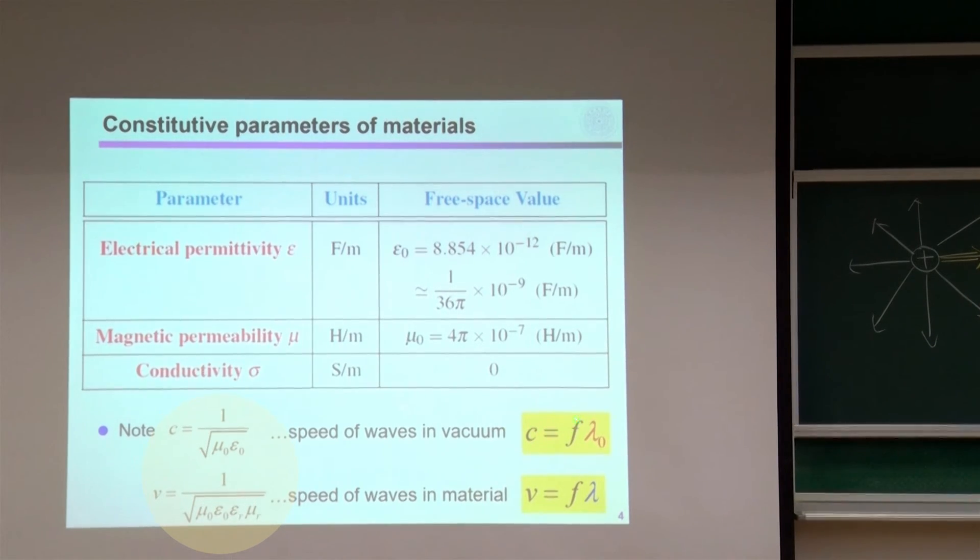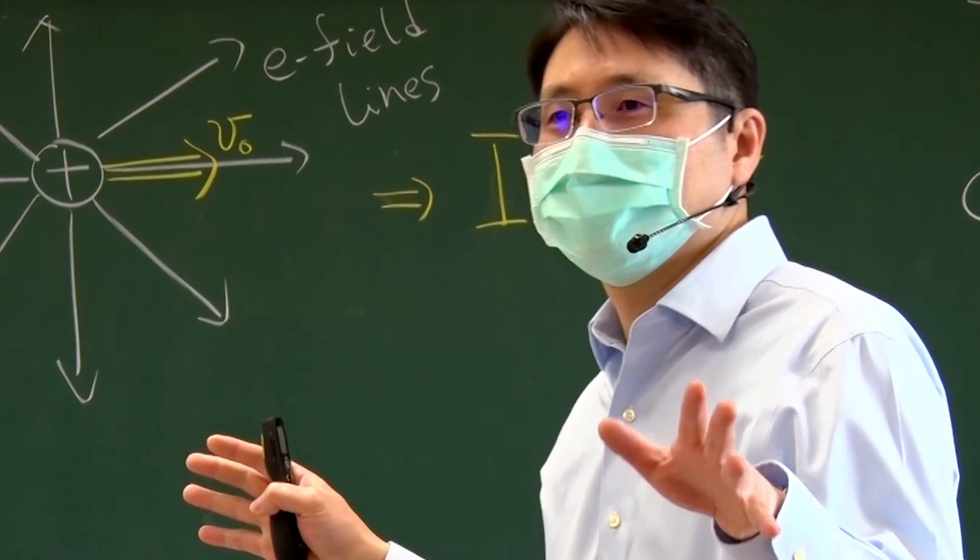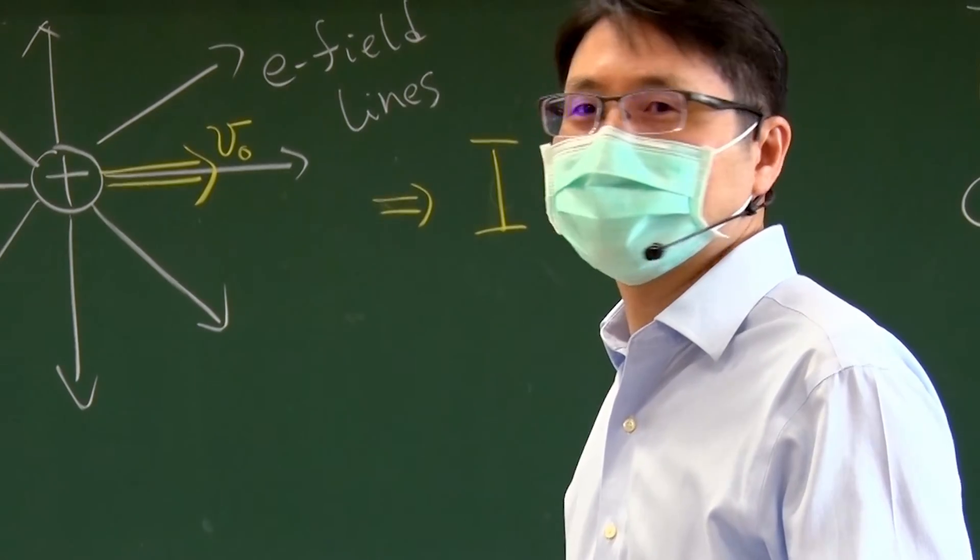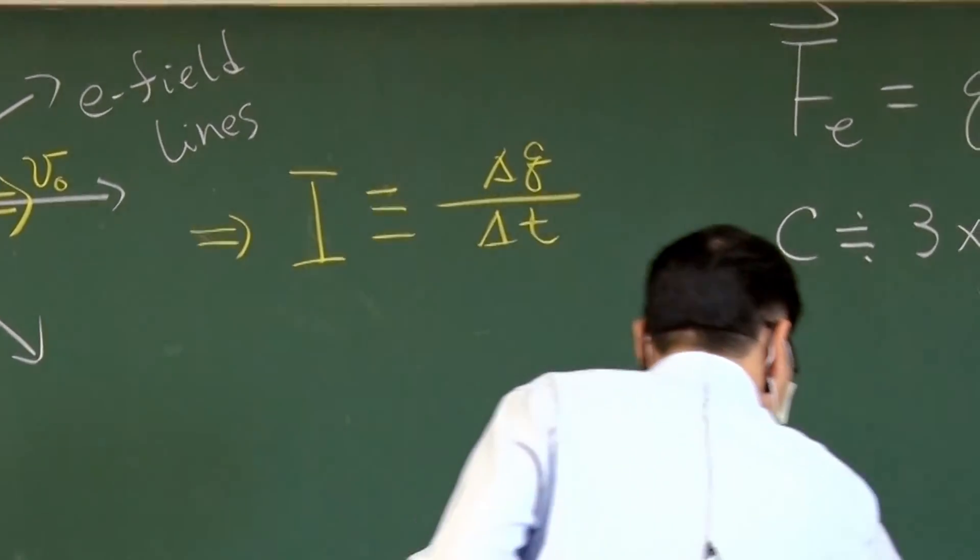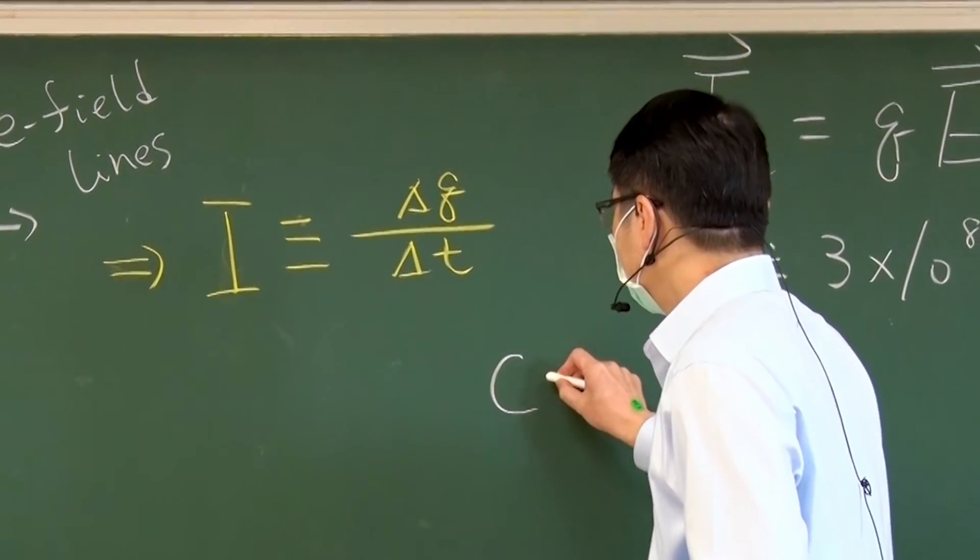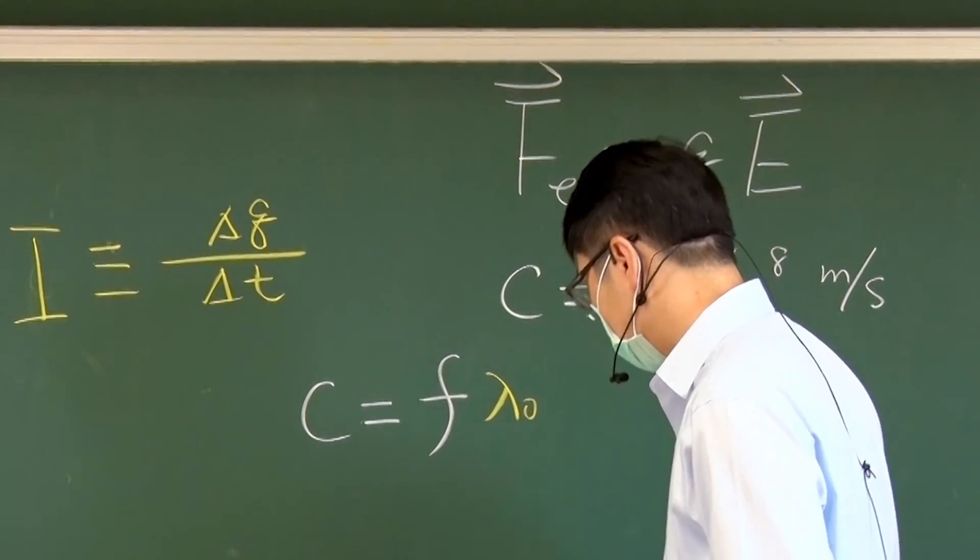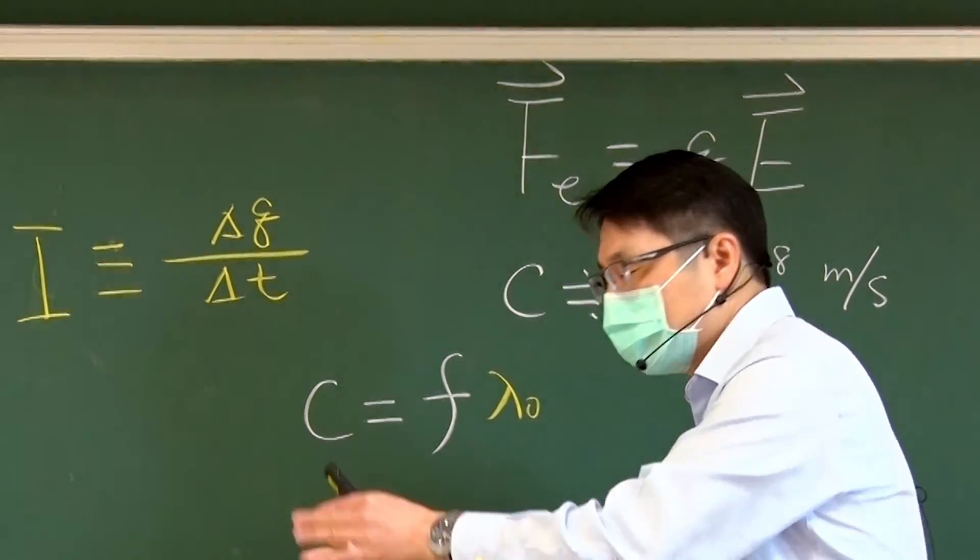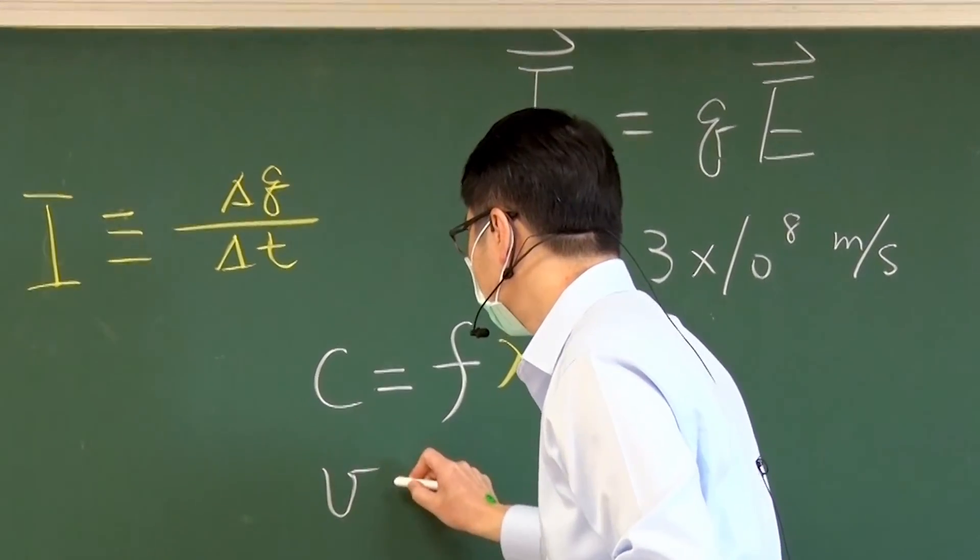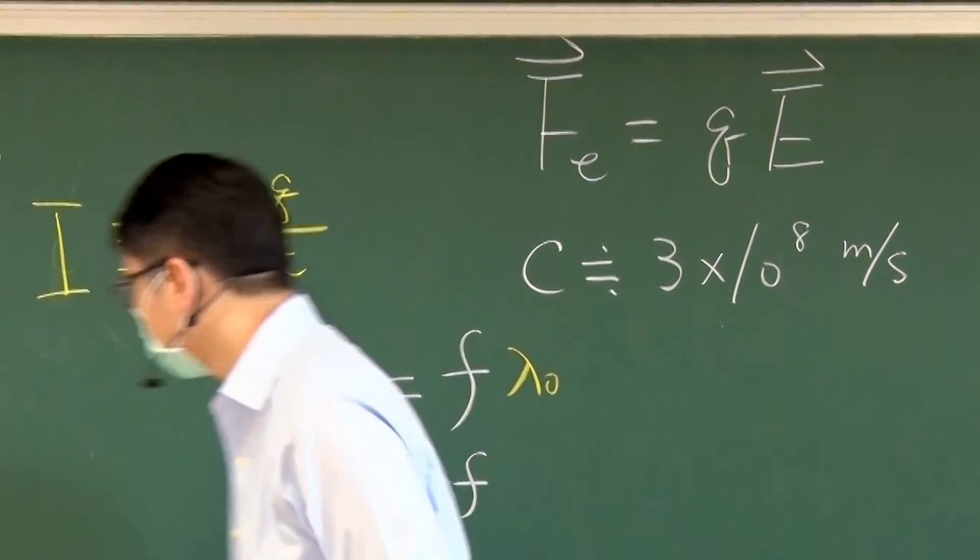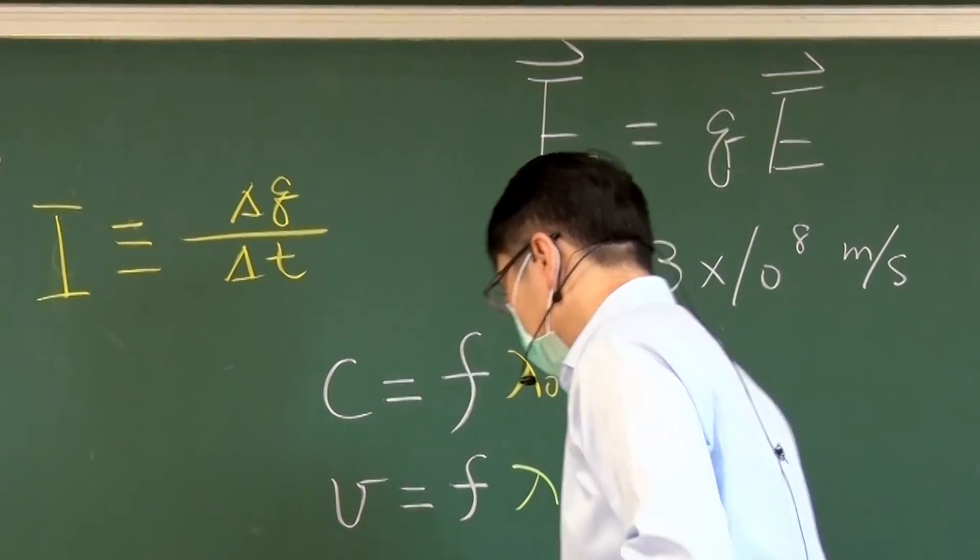So C equals frequency times lambda zero. So this is something you learned from maybe middle school. So C = f × λ₀. So let me rewrite these two mathematical equations. V = f × λ.